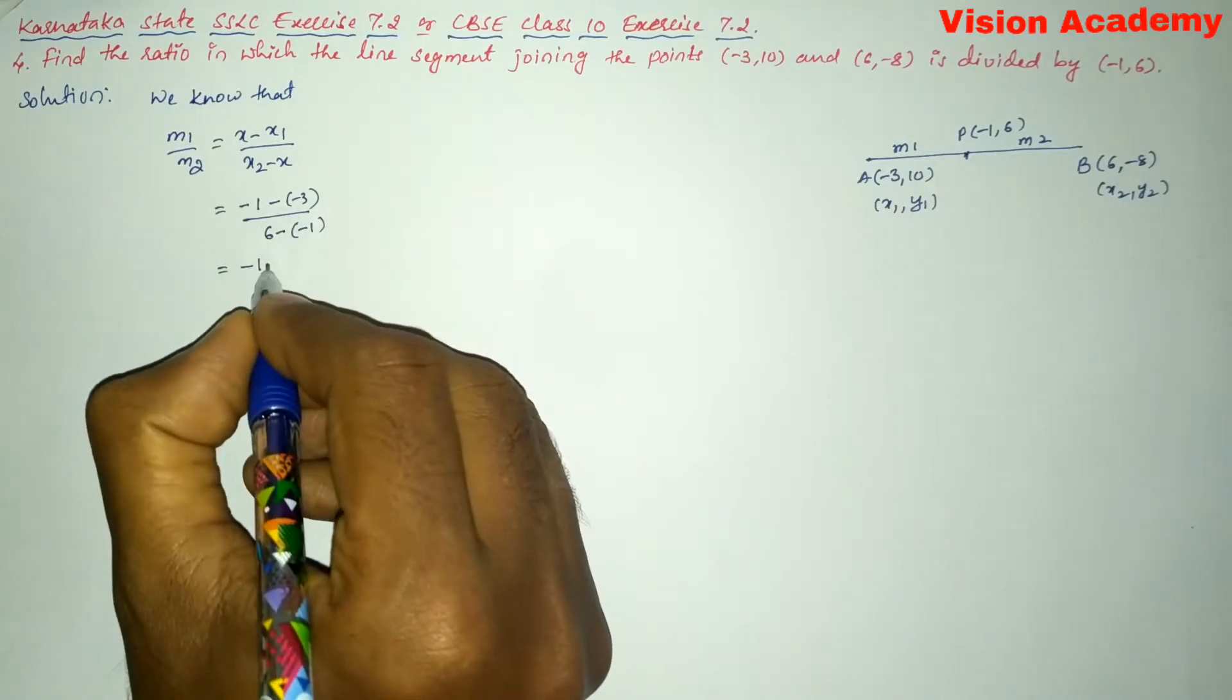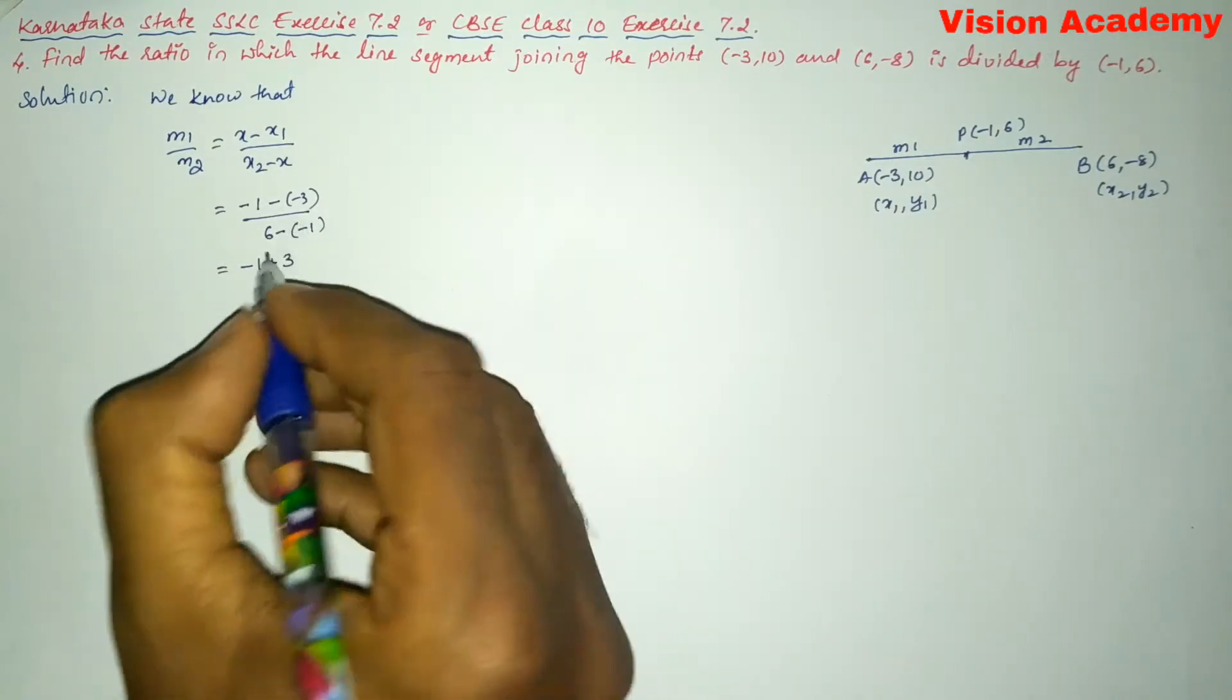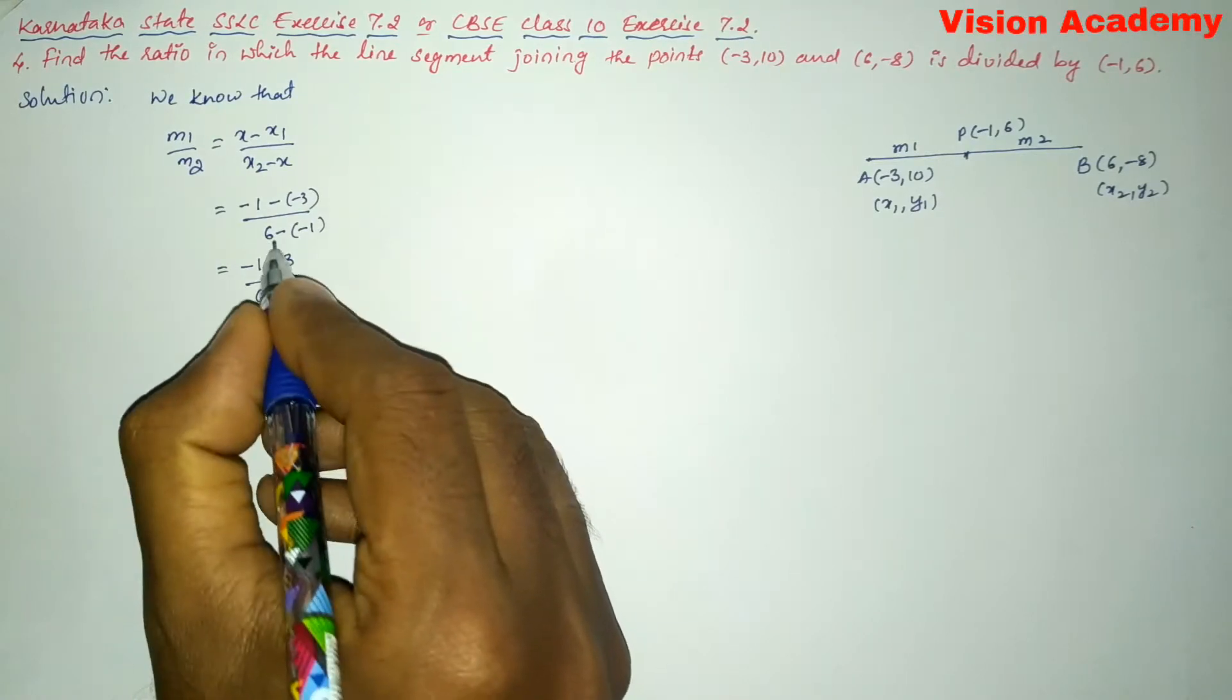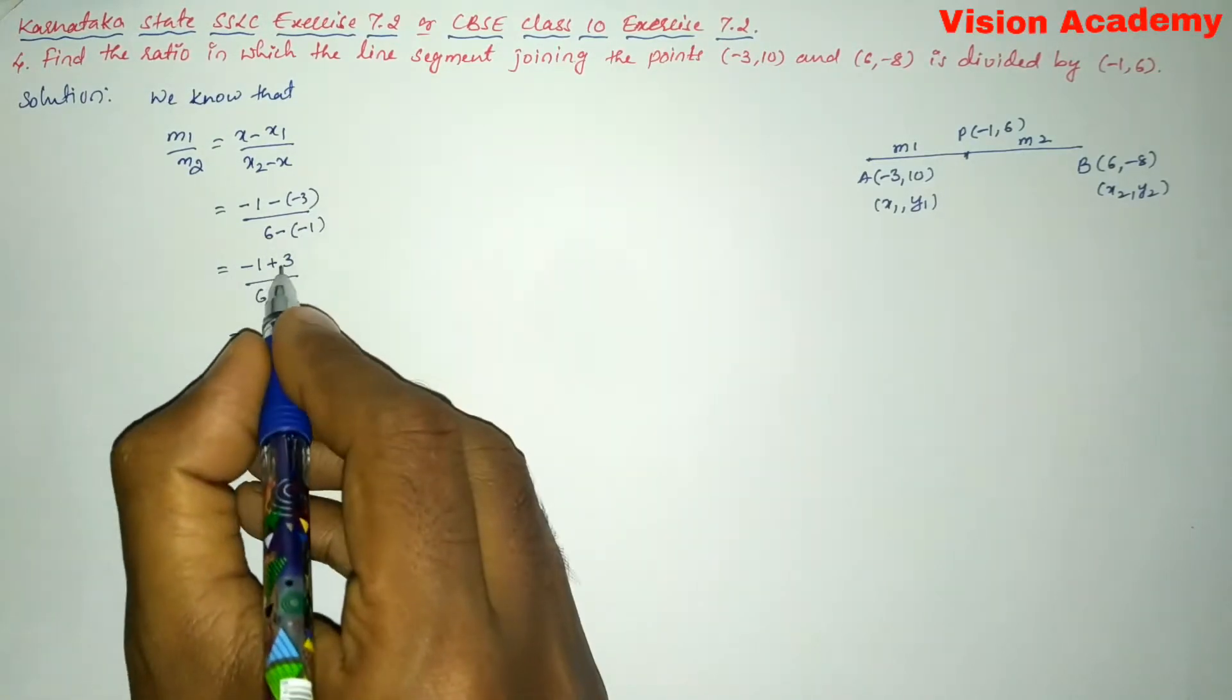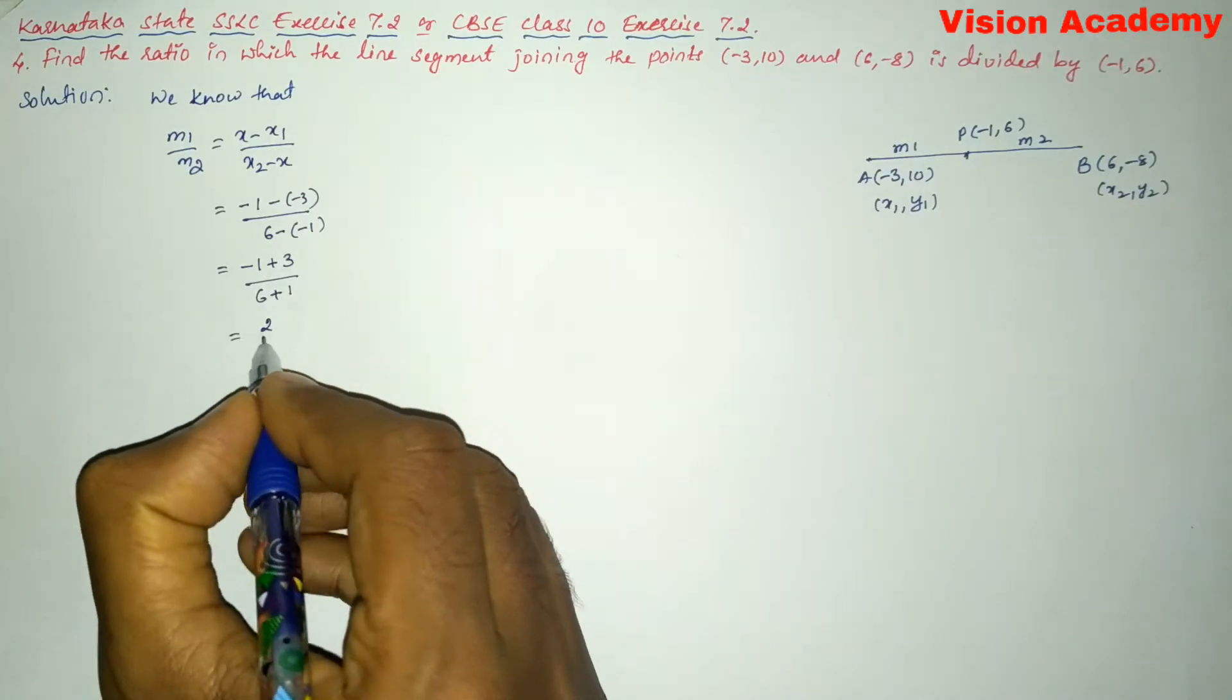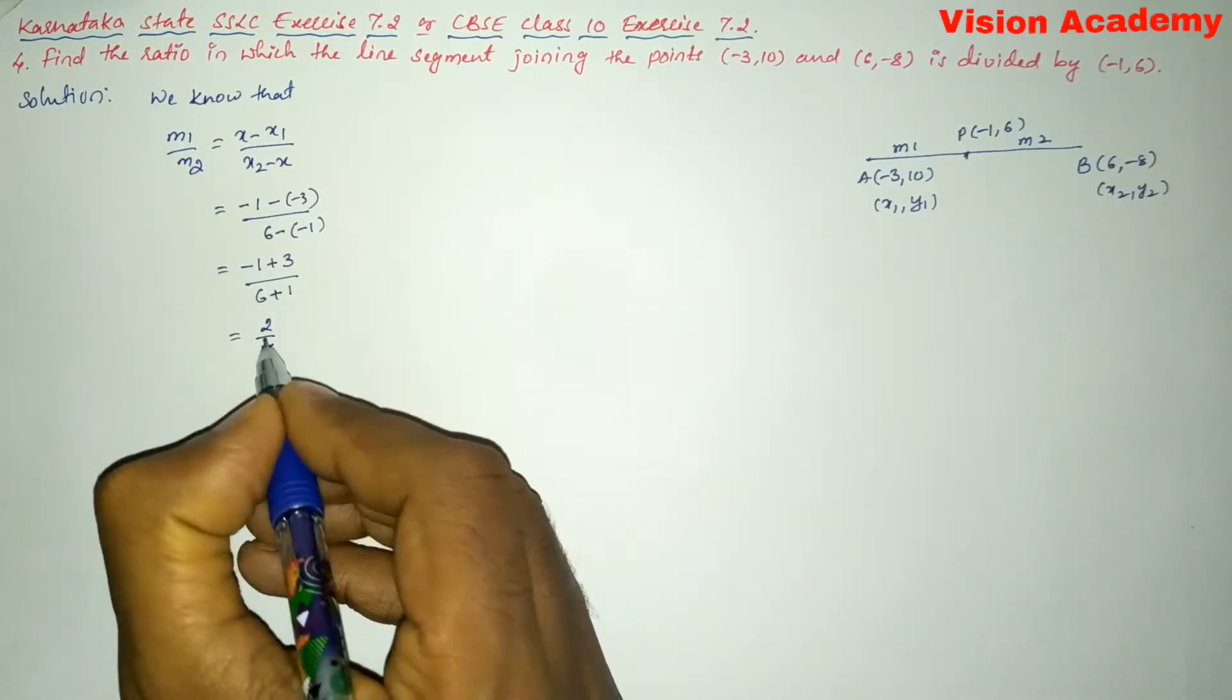Minus 1 minus negative 3 gives plus 3, divided by 6 minus negative 1 gives plus 1. This gives us 3 minus 1 is 2, and 6 plus 1 is 7.